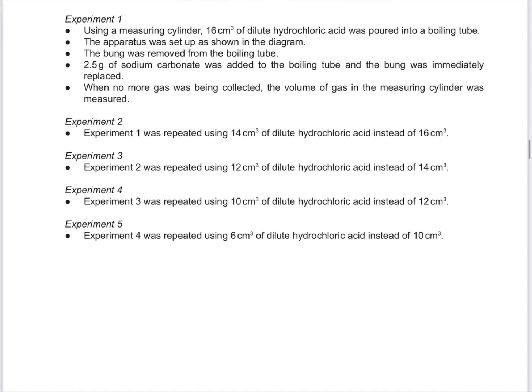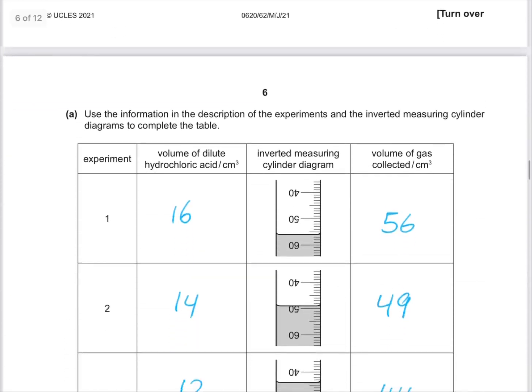When no more gas was being collected, the volume of gas in the measuring cylinder was measured. Experiment 2 used 14 cm³, experiment 3 used 12, experiment 4 used 10, and experiment 5 used 6 cm³ of dilute hydrochloric acid.